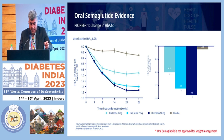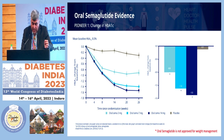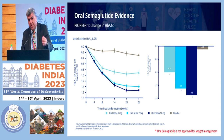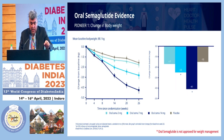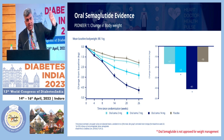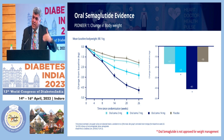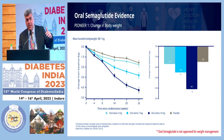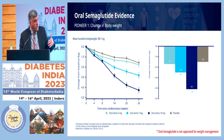The evidence for oral semaglutide: Pioneer 1, its monotherapy trial versus placebo over 26 weeks, showed a dose-dependent reduction in HbA1c, though the difference between 7 mg and 14 mg in HbA1c reduction is not highly pronounced. There is also a significant effect on body weight. With a mean baseline body weight of 88.1 kg, approximately 4.1 kg weight reduction was achieved over 26 weeks with 14 mg oral semaglutide. Similar to HbA1c, if baseline weight is higher, greater weight reduction is expected.